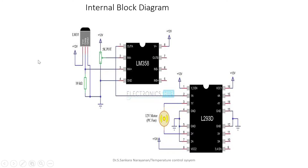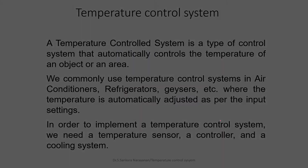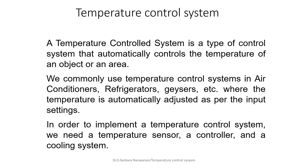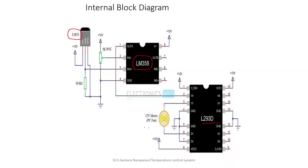In the block diagram, we have an LM35 temperature sensor, followed by an LM358 operational amplifier, then a controller and motor driver. For the cooling system, we have a fan. So the key components are the LM35 temperature sensor, the LM358 operational amplifier, and the L293D motor driver.